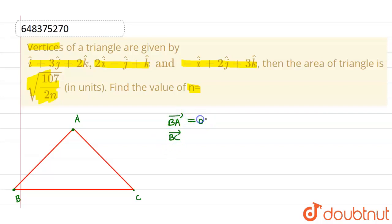So BA vector is nothing but OA vector minus OB vector, and BC vector can be written as OC vector minus OB vector. Now let us suppose this is given as OA vector, this is OB vector and this is last one as OC vector.